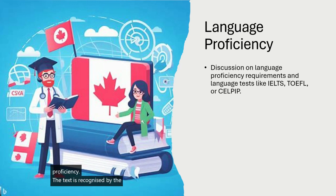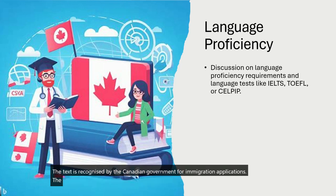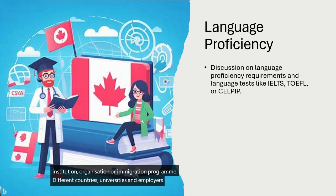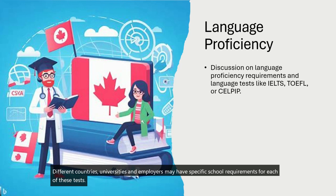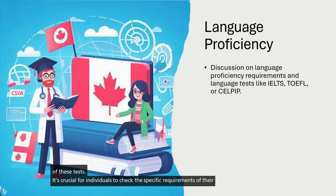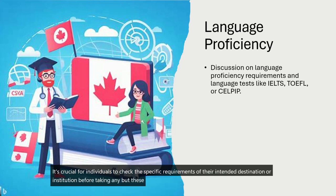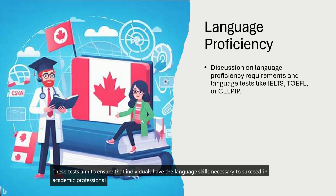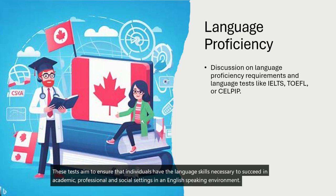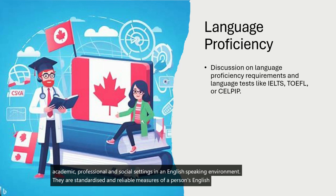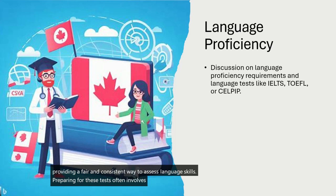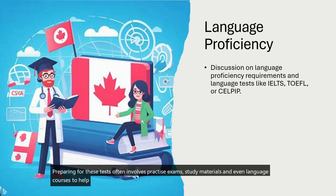The test is recognized by the Canadian government for immigration applications. The language proficiency requirements and scores needed vary depending on the institution, organization, or immigration program. Different countries, universities, and employers may have specific score requirements. It's crucial for individuals to check the specific requirements of their intended destination or institution before taking any of these tests. These tests are standardized and reliable measures of English language proficiency. Preparing often involves practice exams, study materials, and even language courses to help individuals achieve their desired scores.